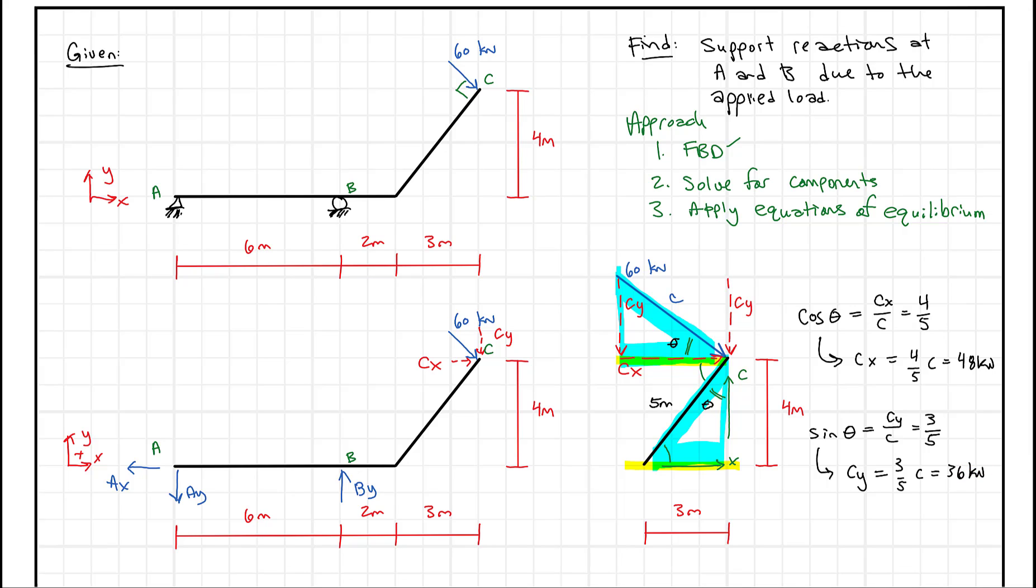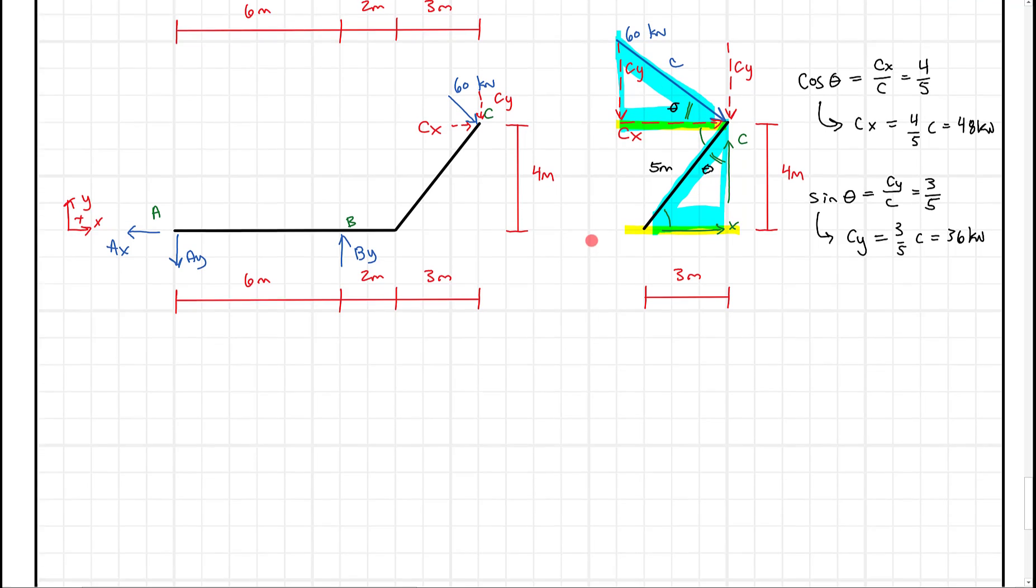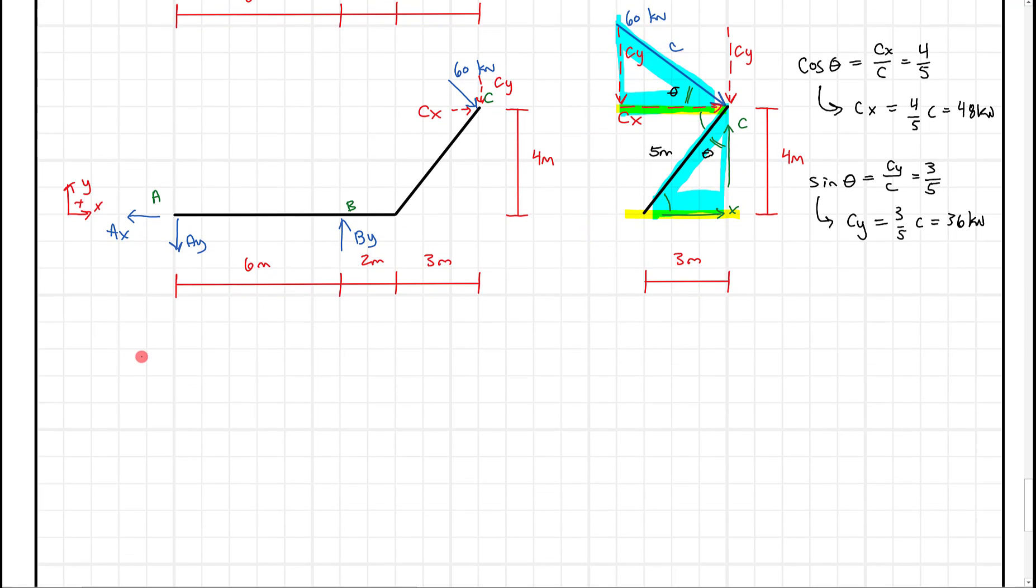So now this is cool, because we've found our components, and all we have left is to apply our equations of equilibrium. Let's start with the low-hanging fruit. Sum of the force in the x-direction equals zero. I like to show that being positive to the right. So we have minus Ax plus Cx equals zero. We know that Cx equals 48, so we get minus Ax plus 48 kilonewtons equals zero. If we flip things around, we get Ax equals 48 kilonewtons.